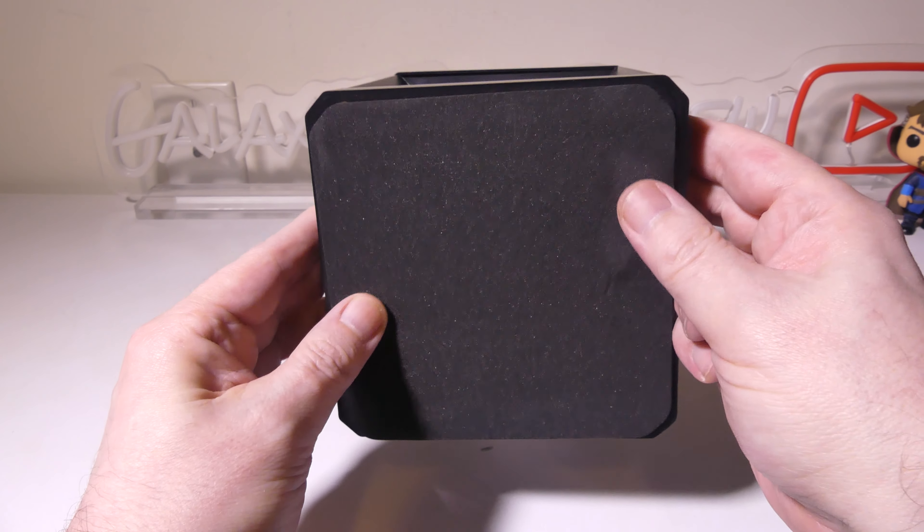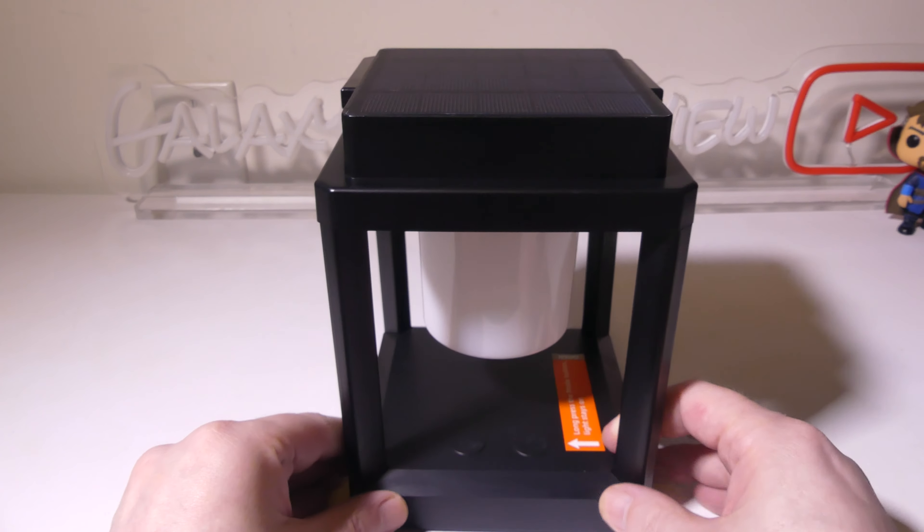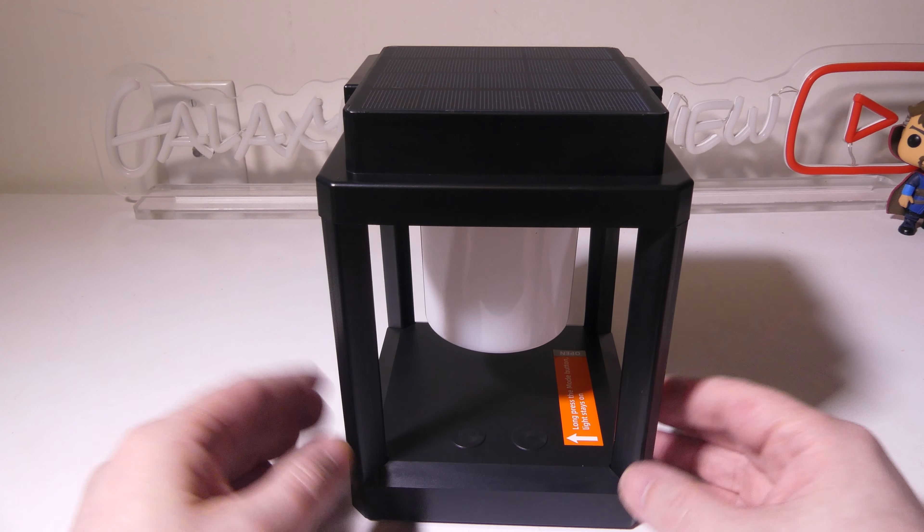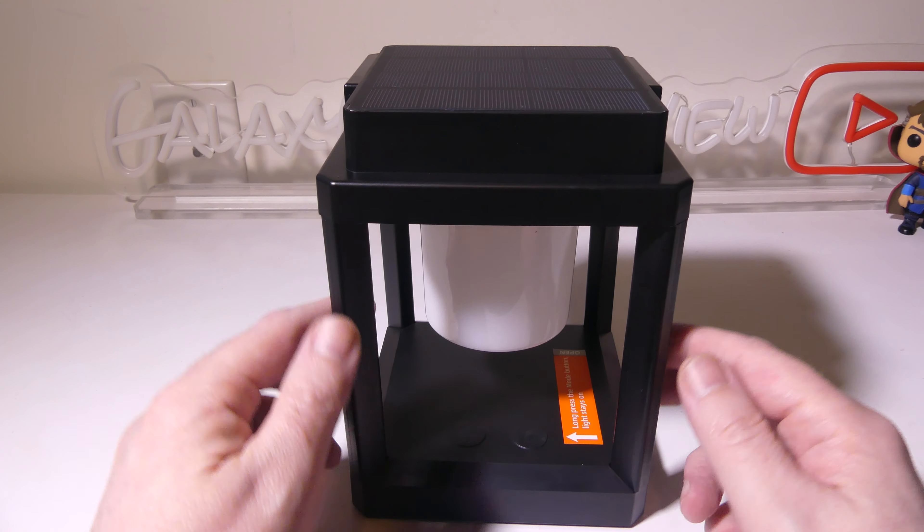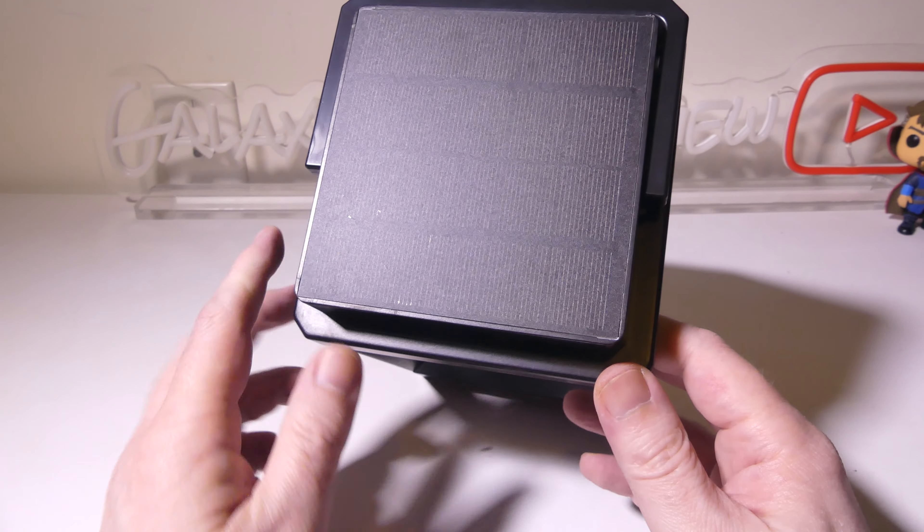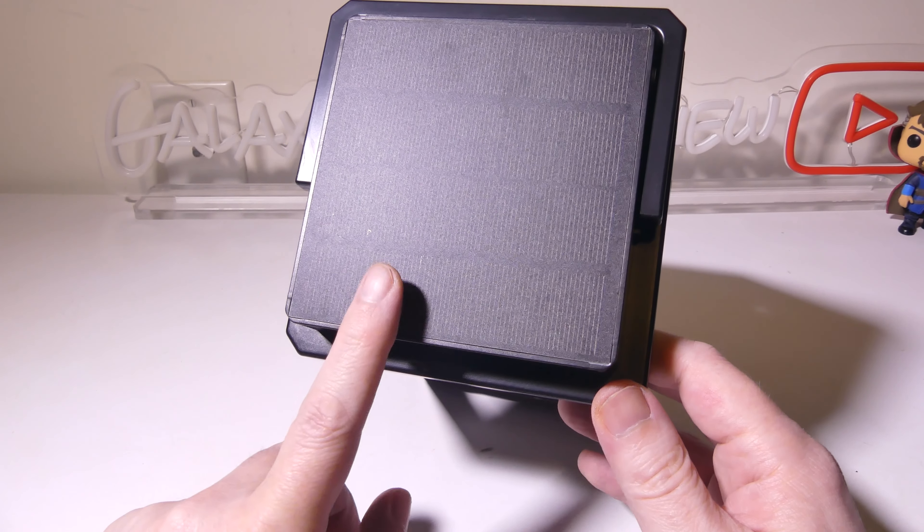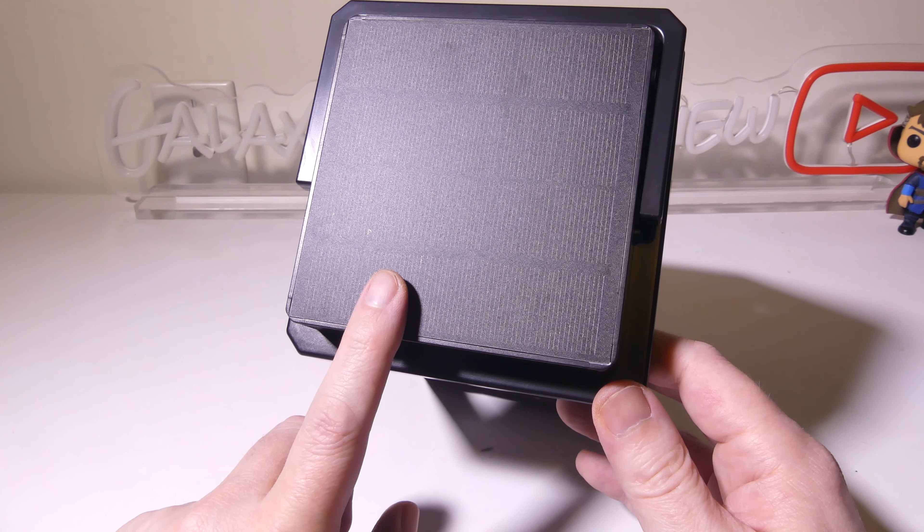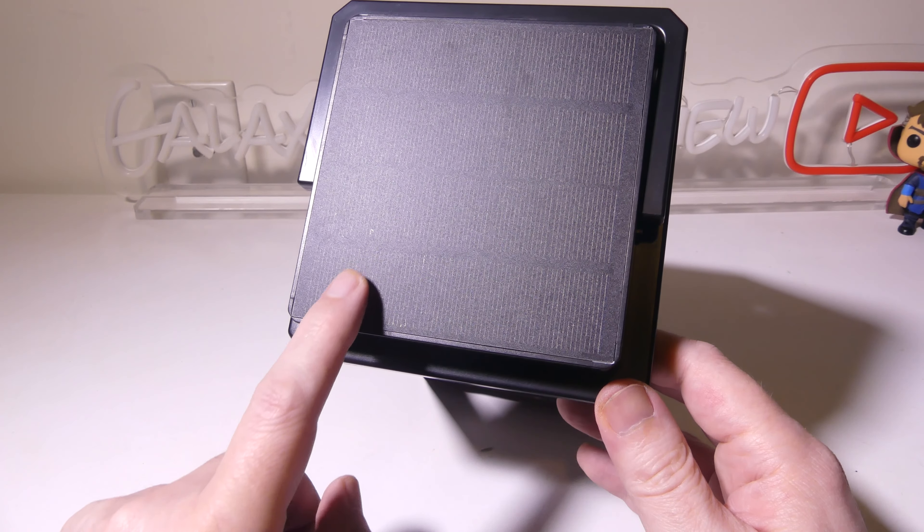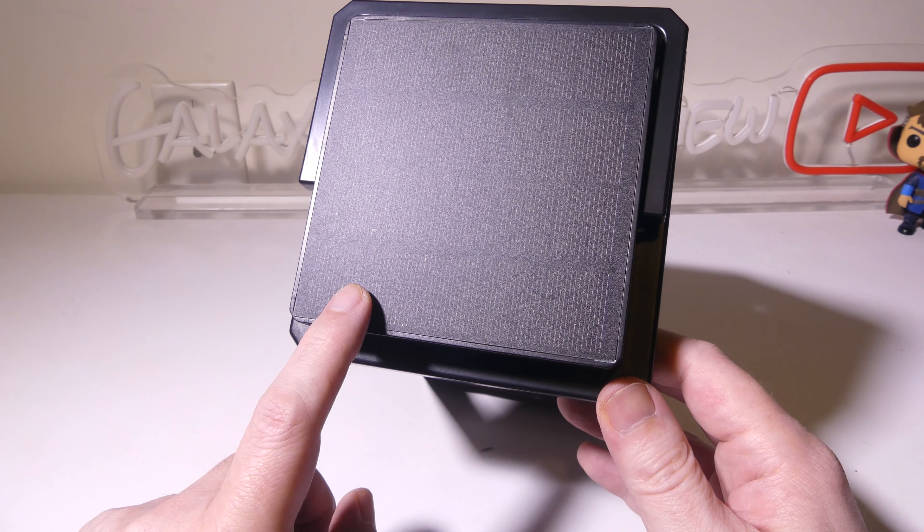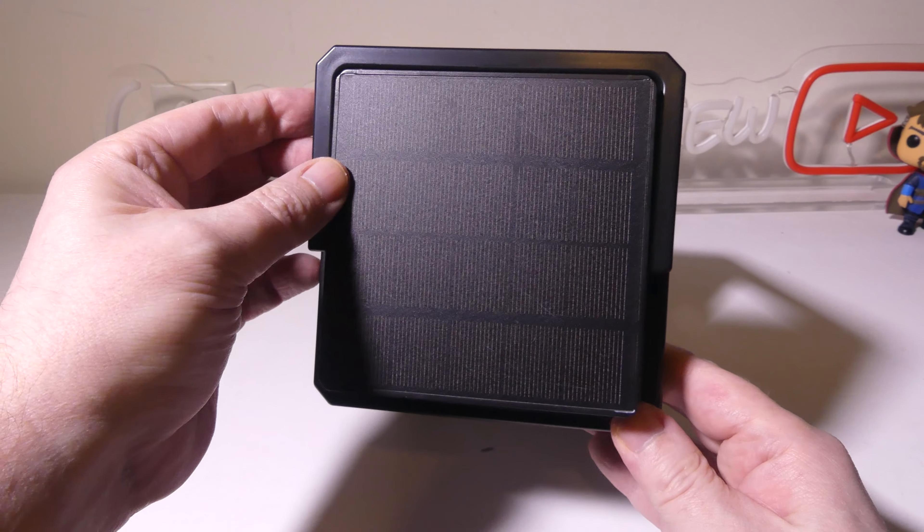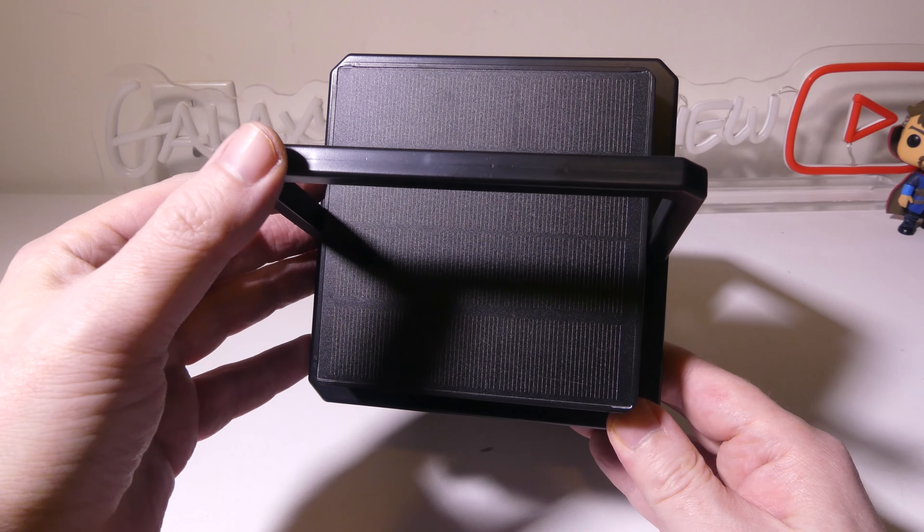On the bottom, we do have a nice little pad to keep this in place if you're going to use it as a table lamp, for instance, but it also has a solar panel at the top here, which will actively recharge the battery as long as there's light getting to the solar panel, so that's always a nice thing without having to recharge this constantly.